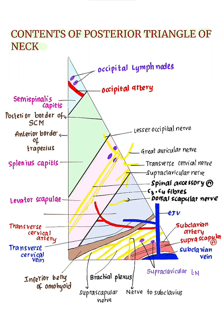Hi everyone. In this video we are going to see about contents of the posterior triangle of the neck. The posterior triangle of the neck is subdivided into two triangles: the upper occipital triangle and the lower subclavian triangle.